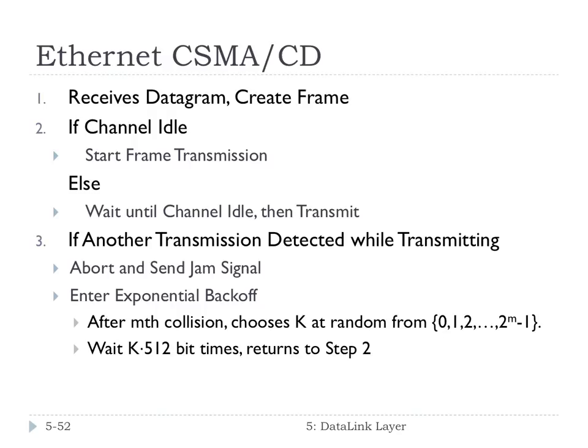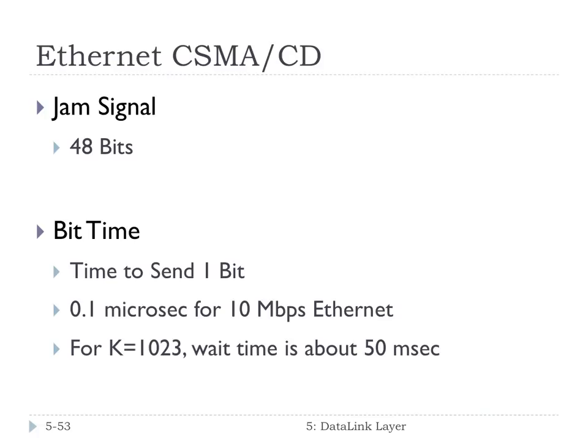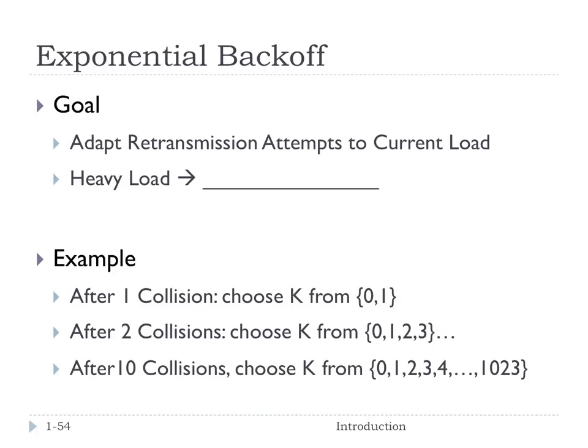The jam signal is 48 bits, and its purpose is to make sure that all other transmitters are aware of the collision. Bit time is the time it takes to send one bit — if it's 10 megabit per second Ethernet, that's 0.1 microseconds; if it's 100 megabit Ethernet, it's 0.01 microseconds. The goal of exponential backoff is to adapt the retransmission attempts to the current load.